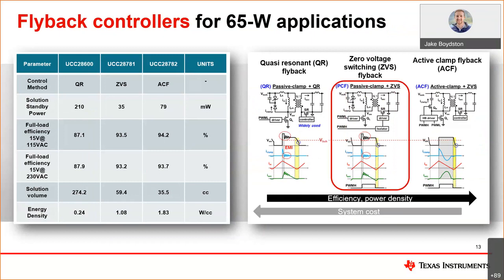If you're looking specifically for a variable frequency flyback controller, I've showcased a few key flyback product types that you should consider. If you are looking for the lowest system cost, consider our UCC28600 quasi-resonant flyback. If you're looking for the highest efficiency and density, the UCC28782 active clamp flyback would be most optimized for your needs. But if you're looking for a blend of low cost and high efficiency, our UCC28781 zero voltage switching flyback is a sweet spot between the two, with a very low standby power of 35 milliwatts in the system.